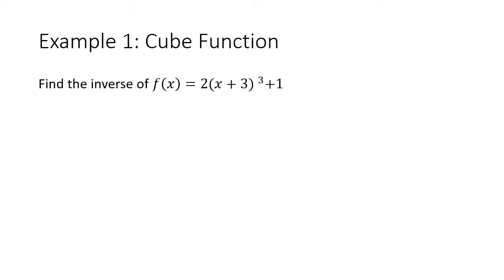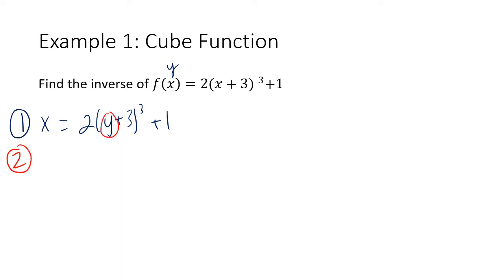Here we have: find the inverse of f(x) = 2(x + 3)³ + 1. Step one: switch x and y, so we have x = 2(y + 3)³ + 1. Step two: use inverse operations to isolate y. First, subtract 1 from both sides, leaving x − 1 = 2(y + 3)³. Then divide both sides by 2, giving (x − 1)/2 = (y + 3)³.